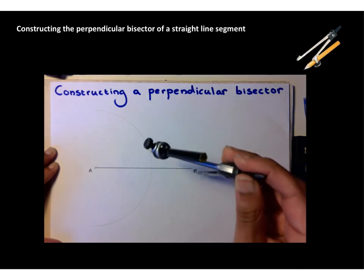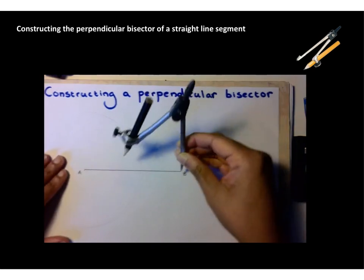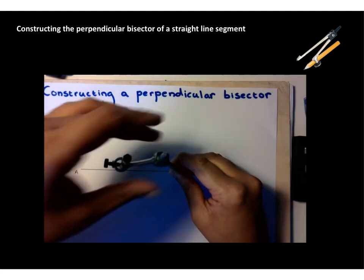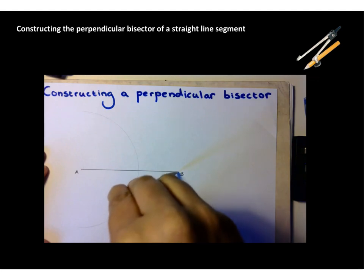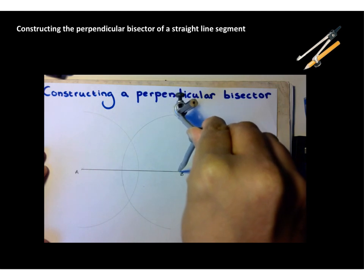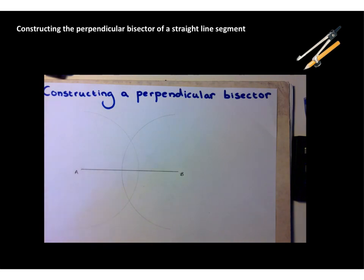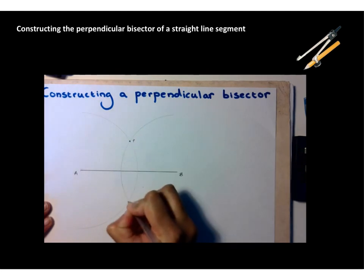Now, don't change the compasses, keep them at the same width, and we're going to do exactly the same thing, except we're going to place the pin at the other end of the line segment at point B. I'm going to draw an arc centered at B, which has the same radius as the arc we've just drawn centered at A, and here we have it. You can now see that the two arcs intersect at two places. We'll call this one P, and we'll call this one Q.